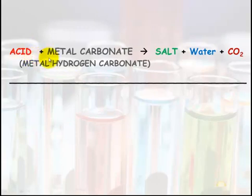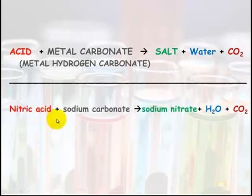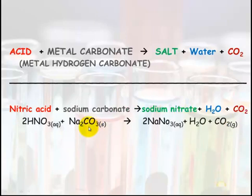The last reaction is an acid plus a metal carbonate or a metal hydrogen carbonate will make a salt plus water. If you have a look, you can see the carbonate there, it's going to make carbon dioxide. Nitric acid plus sodium carbonate will make sodium nitrate plus water plus carbon dioxide. 2HNO3 plus Na2CO3 will make always always always water plus carbon dioxide. The hardest part is figuring out what the salt's going to be.